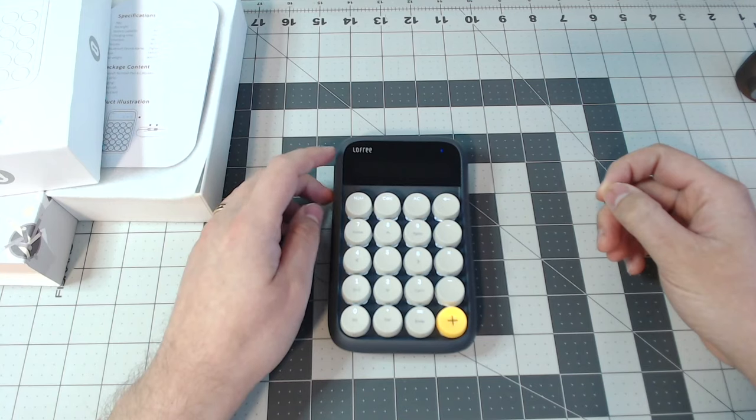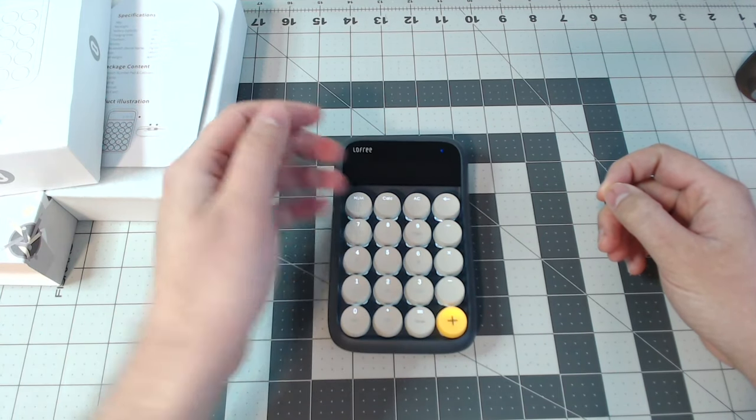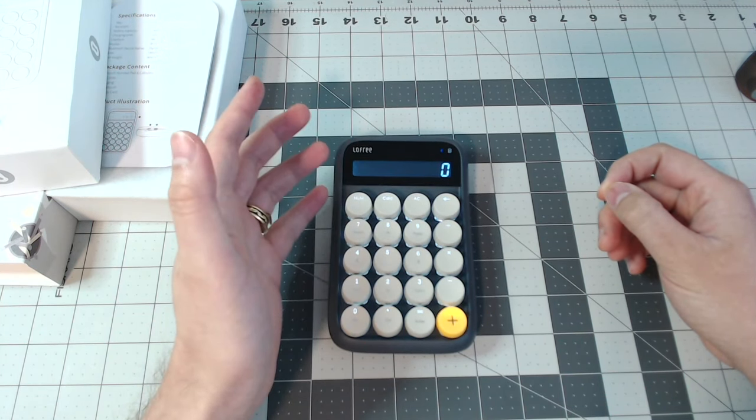Again, you can see when you turn on number mode, Bluetooth pops up, so I can use it with that. Or you just use it as a regular calculator.